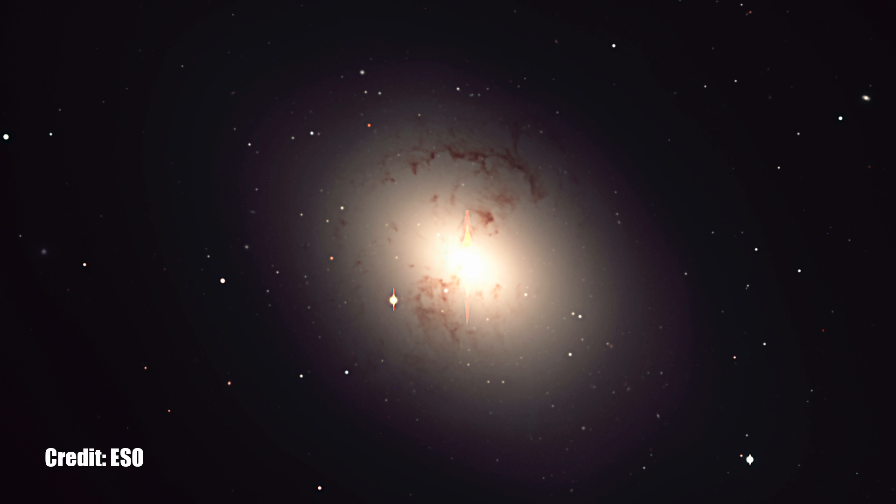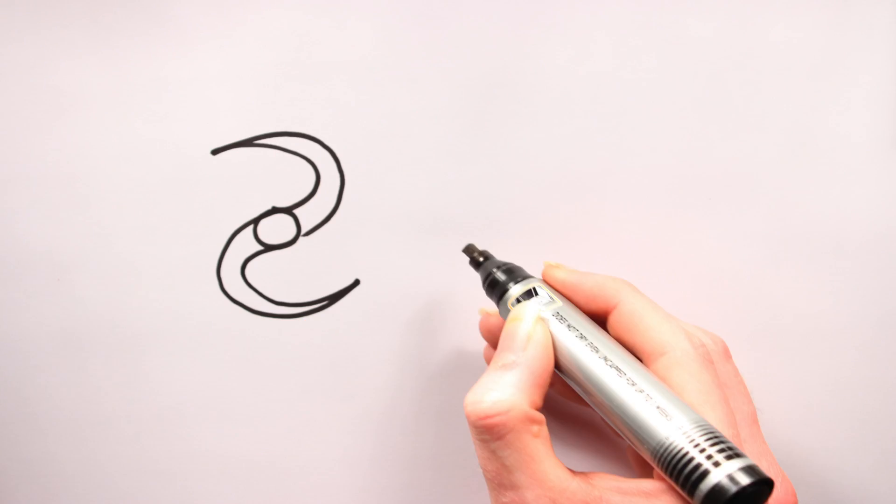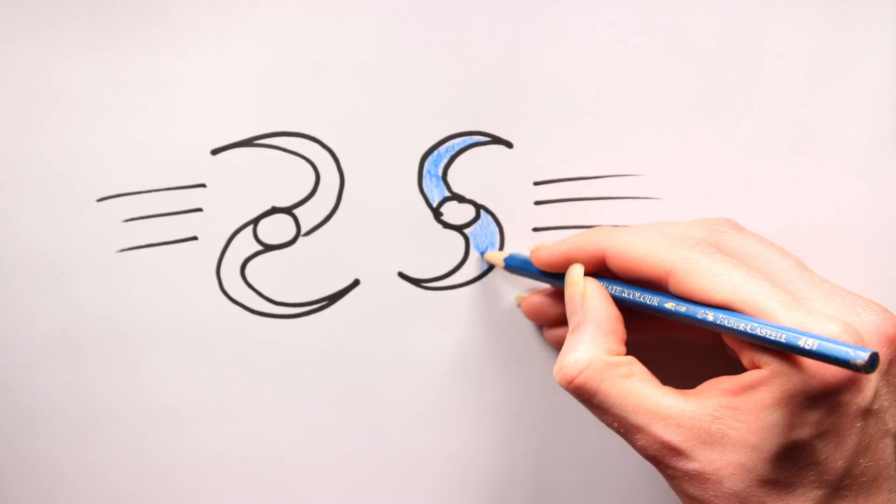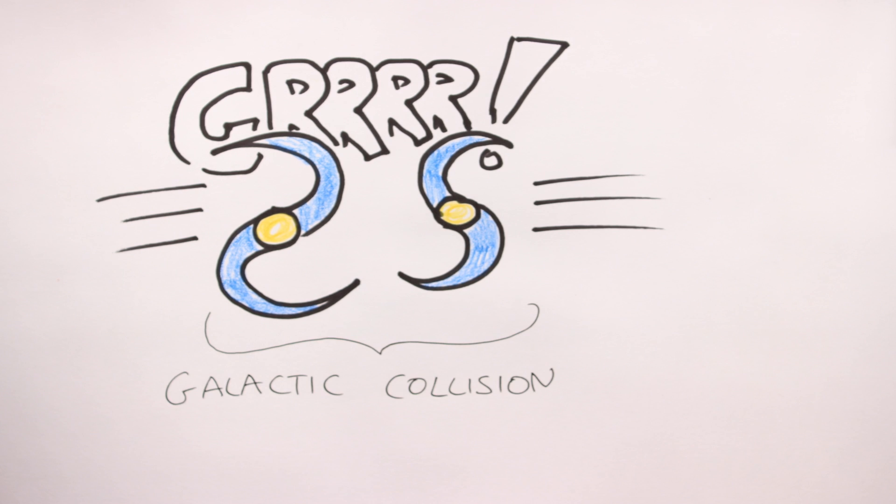Okay, so maybe ellipticals aren't your bag. What of irregular galaxies? Irregular galaxies are understood to be the result of galactic collisions, making them, at best, chaotic systems.